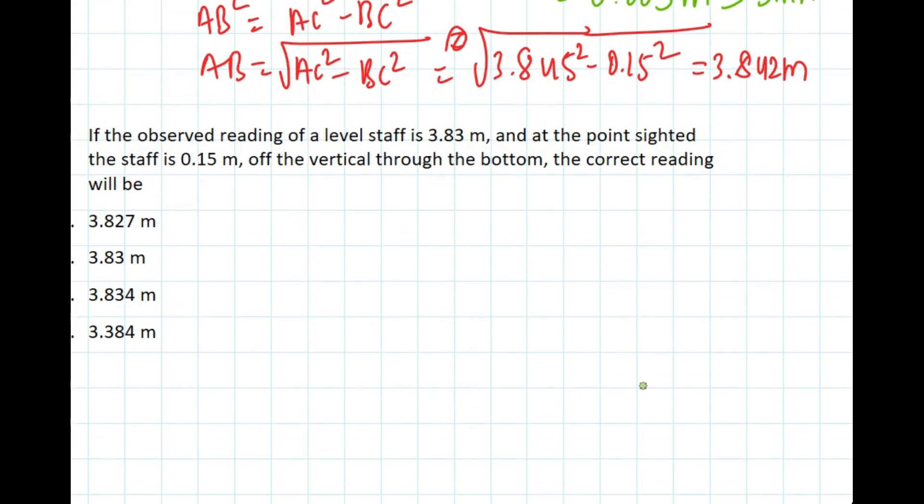Let's draw the figure. This is the ground point, this is the vertical staff, and if this is the line of sight and this is the inclined staff, we know this is 0.15 and this is 3.83, and this value we don't know.